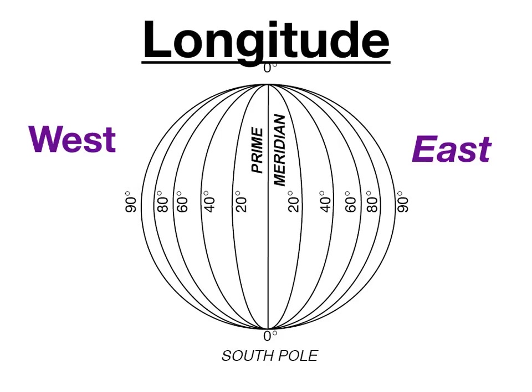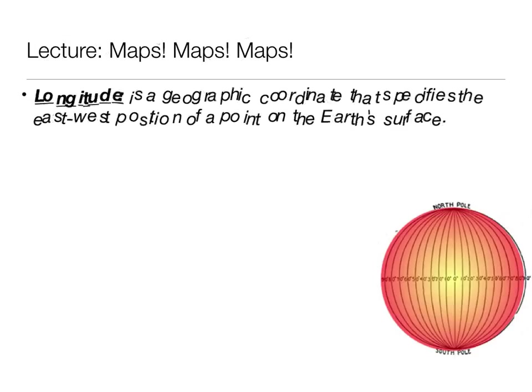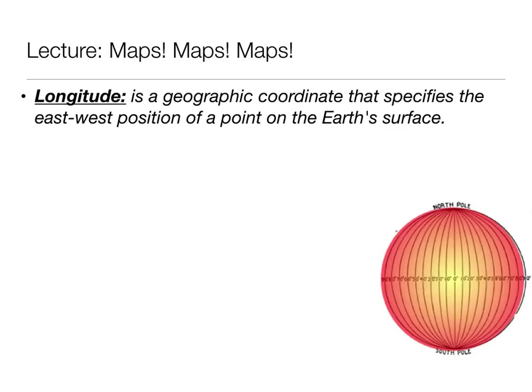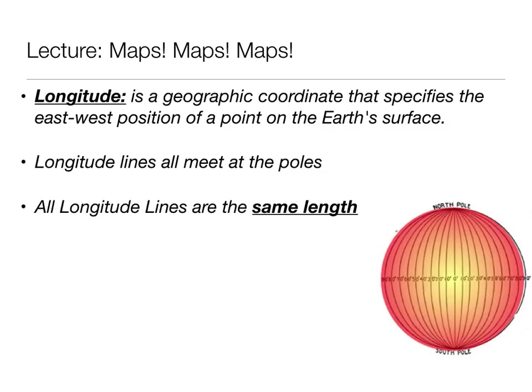The next set of grid lines are called longitude lines. Longitude gives us our relative location east to west. Longitude is a geographic coordinate that specifies the east-west position of a point on the Earth's surface. Longitude lines all meet at the poles, so they are not parallel lines — they meet at both the north and the south pole. All longitude lines are the exact same length; they run from the north pole to the south pole and they all split the Earth exactly in two.